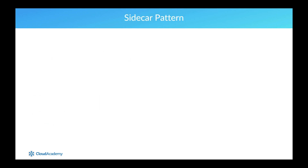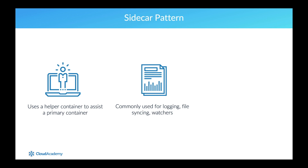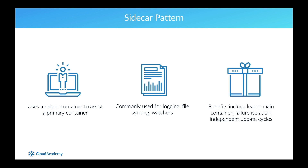The first pattern we will cover is the sidecar pattern. It is the most common one. As the name suggests, the sidecar pattern uses a helper container to assist a primary container. Common examples include logging agents that collect logs and ship them to a central aggregation system. The logging example is explored in the Kubernetes observability lab here on Cloud Academy. Other examples include file sync services and watchers. All of these examples add useful functionality to the main container and can be accomplished by adding a sidecar rather than burdening the main container with additional responsibilities.